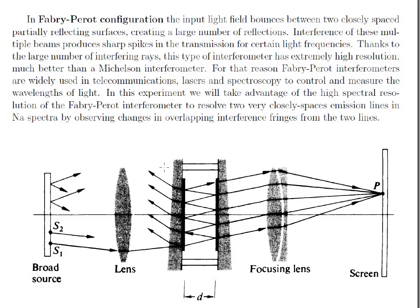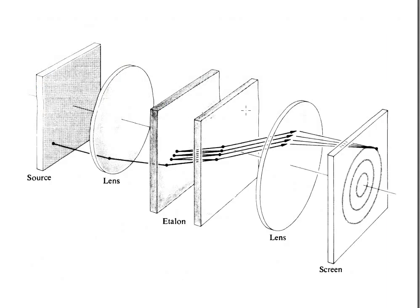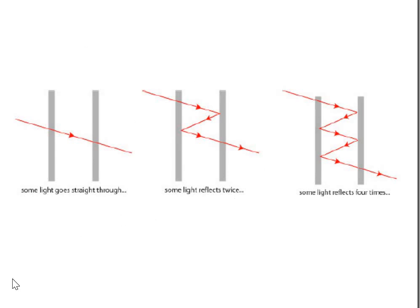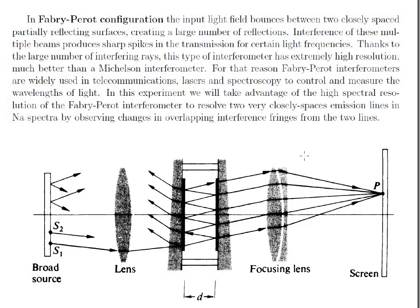Here I am also showing another picture: this is our broad source, lens, and the multiple reflections. In the experiment, we don't use a screen setup; basically we observe this using our naked eye. In the lab, the sodium vapor lamp and the interferometer are present, but the imaging components are not there, so we observe using the eye — the image is formed inside our eye.